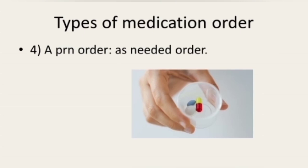The next type is a PRN order, which means 'as needed' order — it means administered if needed. This order allows a nurse to judge when a medication should be administered based on the patient's needs, and also when it can be safely administered to the patient.